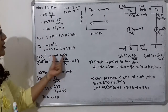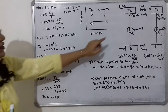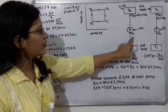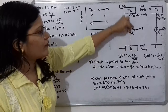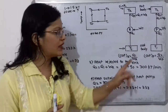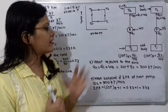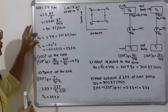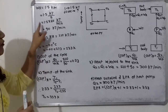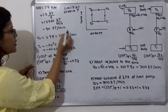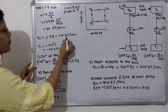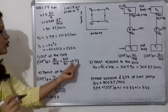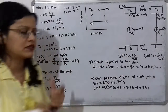Calculation 1 — Coefficient of performance of the refrigeration cycle: COP_R = Q1 / W_R. Both values are in kilojoules per minute, so COP_R = 210 divided by 90, which equals 2.33.